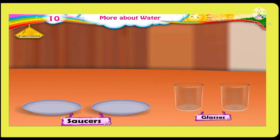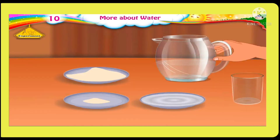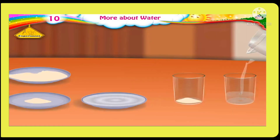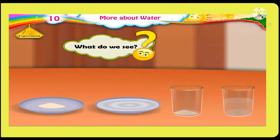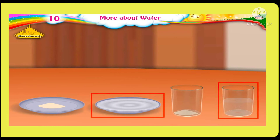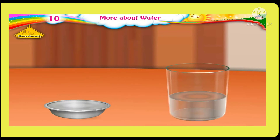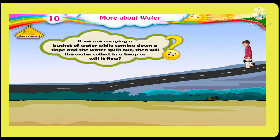Now here is another experiment. Take two saucers and two glasses. Take some wheat or jowar flour in one vessel and water in a jug. Add some flour in one saucer and water in another saucer. Pour some flour in one glass and water in another glass. We can see a small heap of flour in the saucer and in the glass. But the water takes the shape of the glass and the saucer. Water does not have a shape of its own — it takes the shape of the vessel or container in which we pour it.